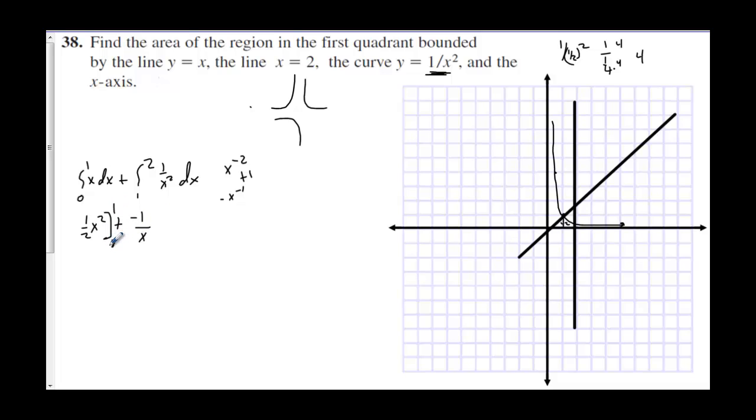We're evaluating this from 0 to 1. And we're evaluating this from 1 to 2. When we plug 1 in here, we get 1 half. When we plug 0 in, we get 0.